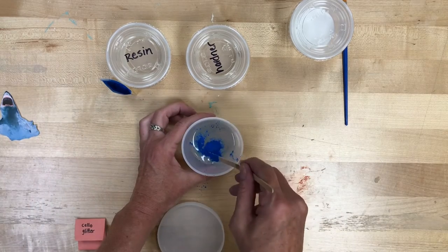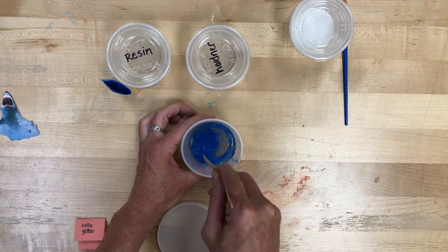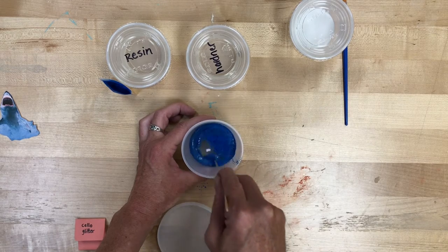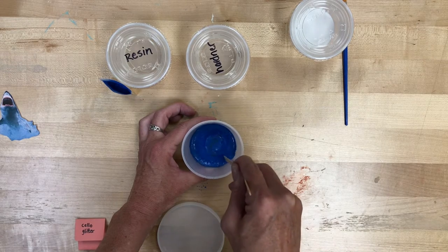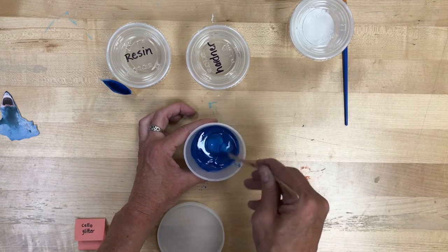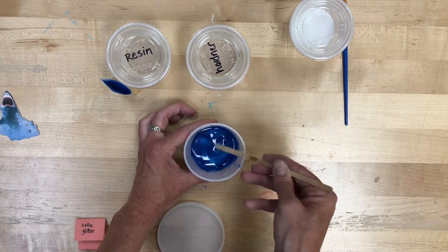Again, you're just going to really slowly stir that in. You don't want to stir quick and create bubbles. But just stir until it all starts to be the same color. It'll start to look really metallic. It'll start to look really iridescent. It'll have a really cool reflective kind of property to it.